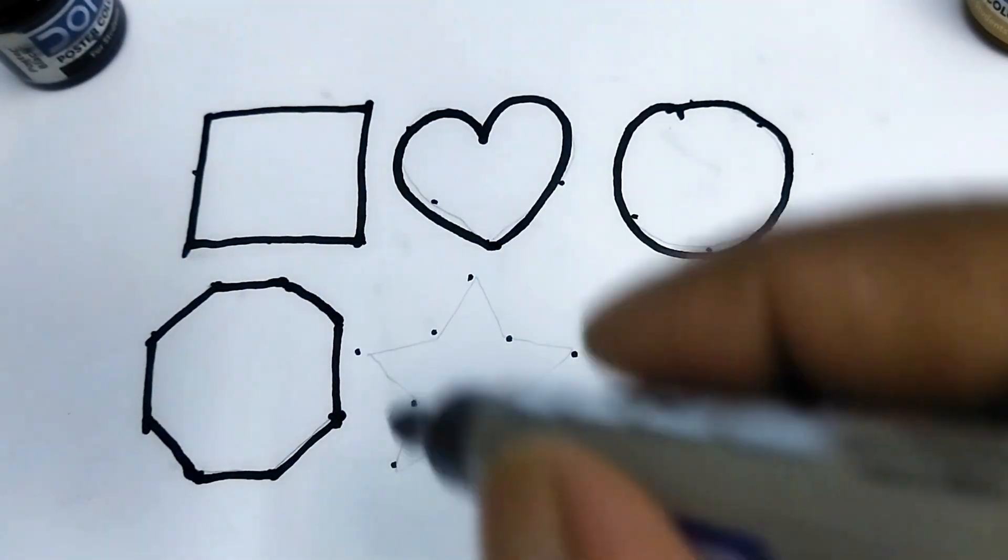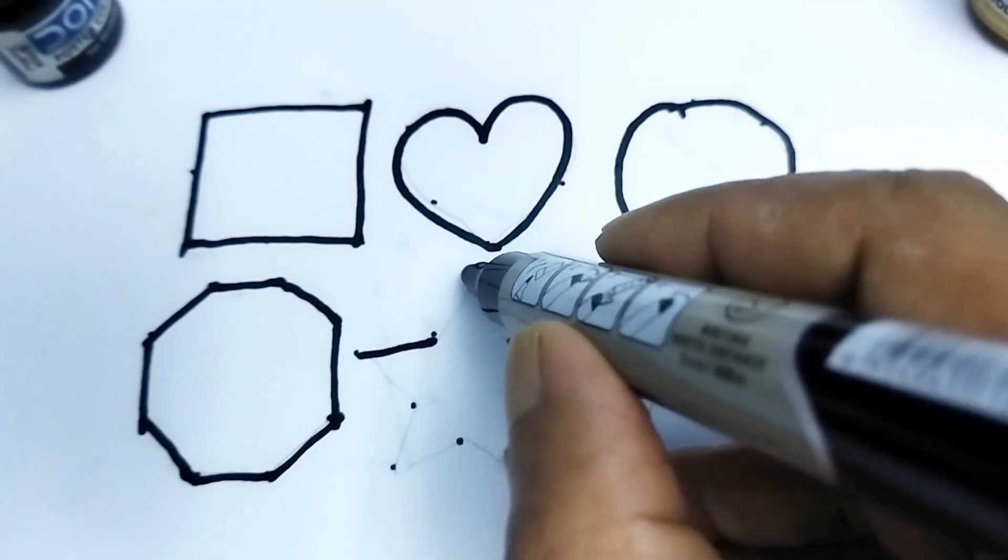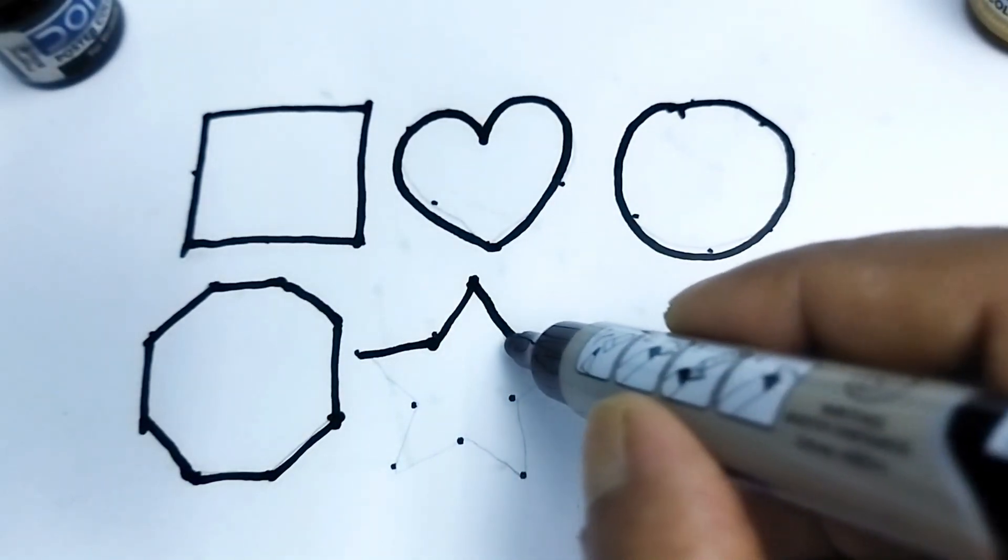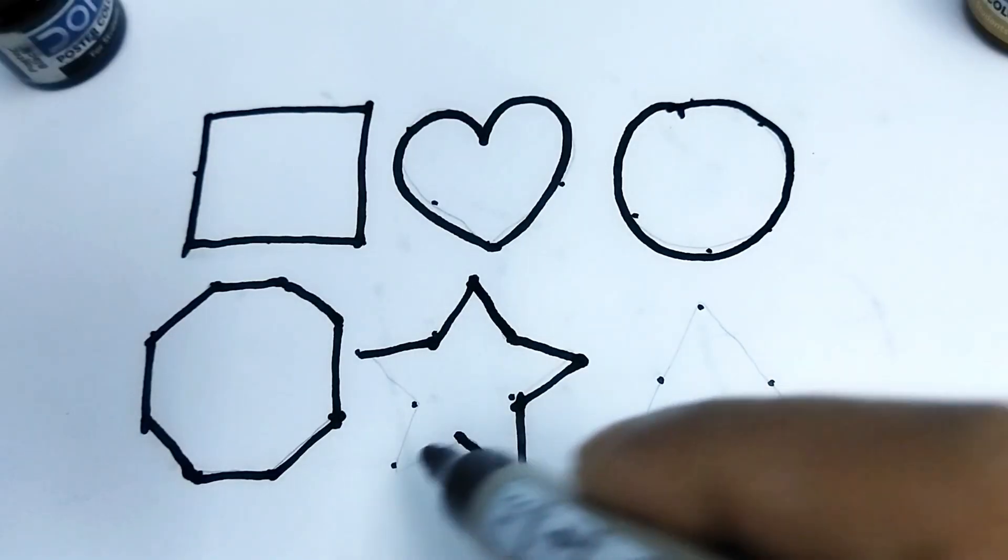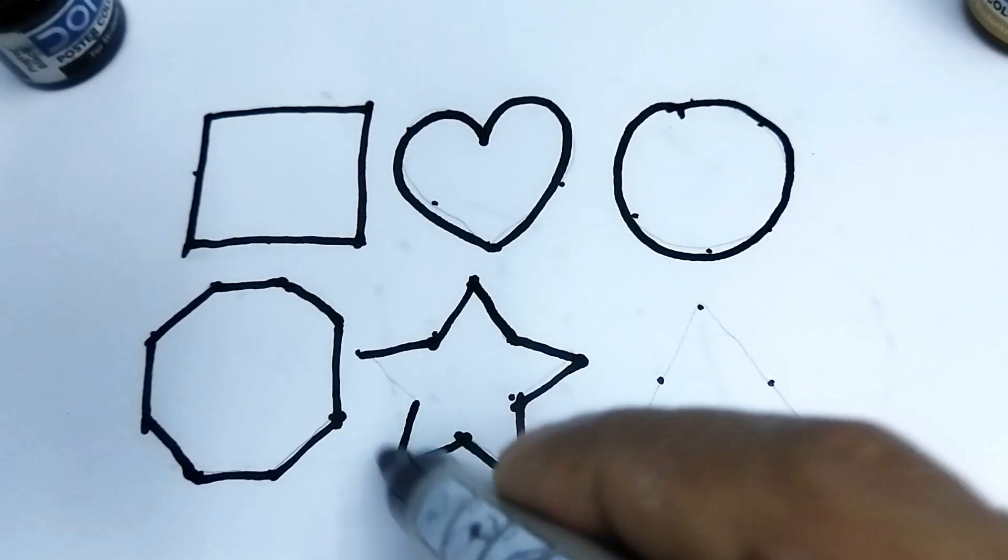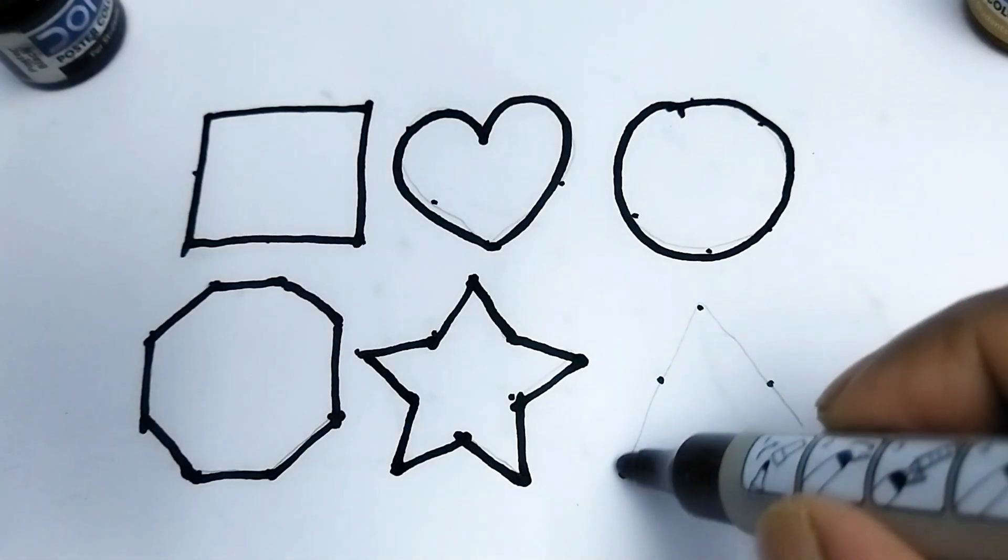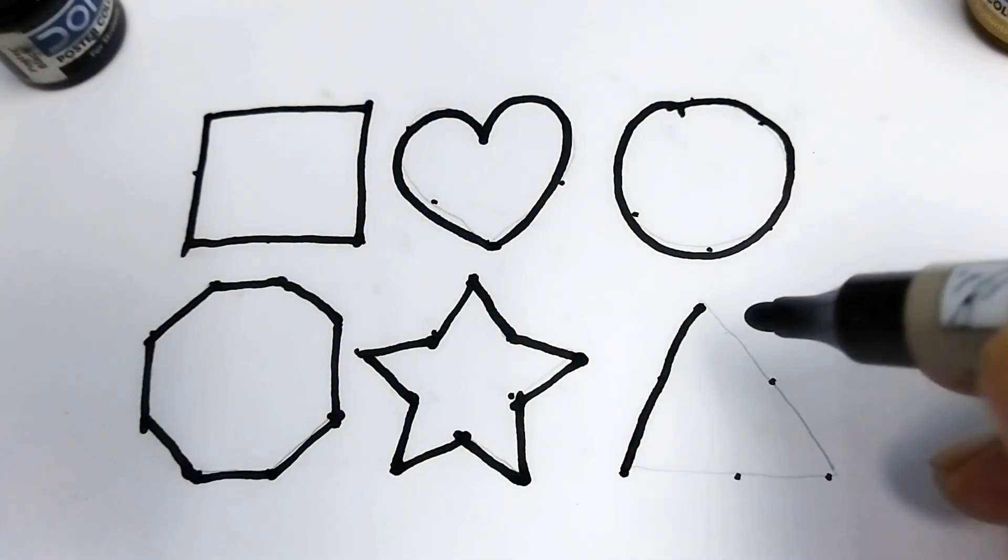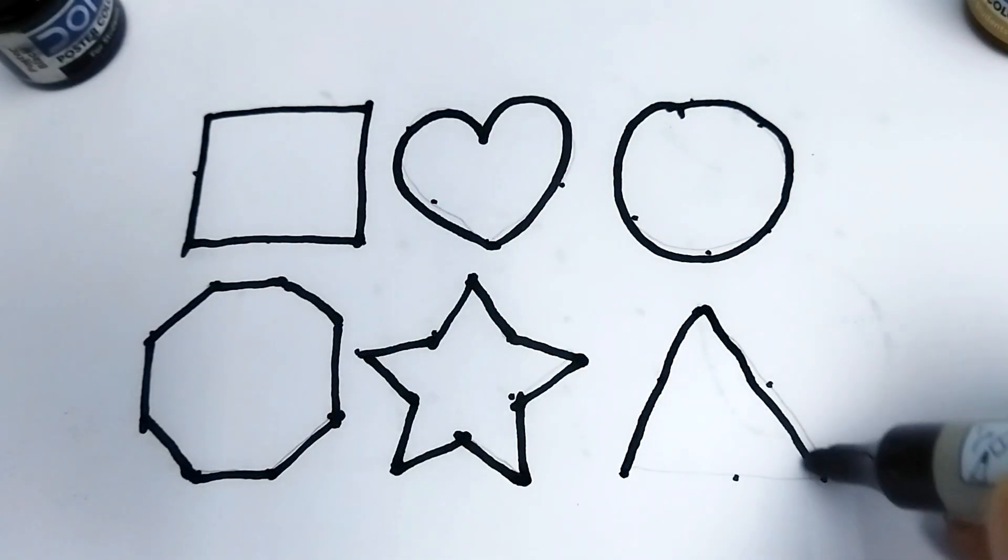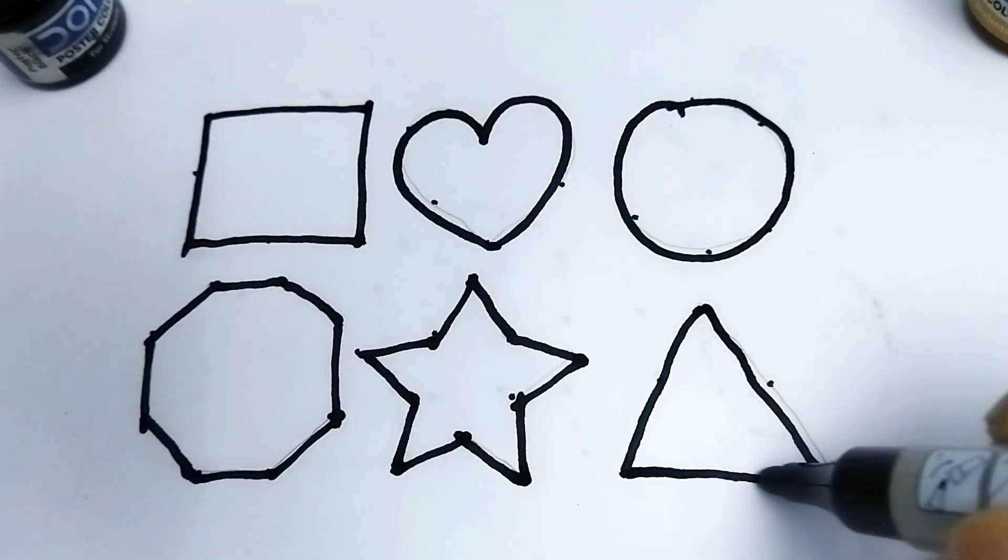Octagon. This is octagon. One, two, three, four, five, six, seven, eight, nine, ten. Star. This is triangle, triangle.